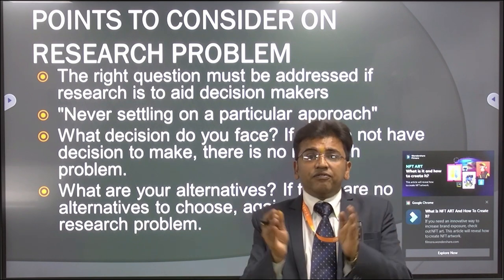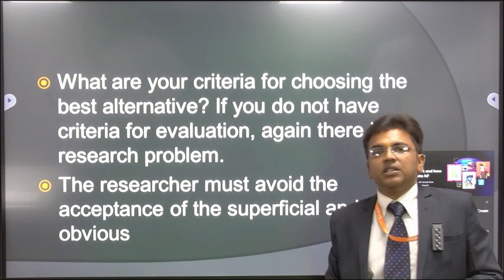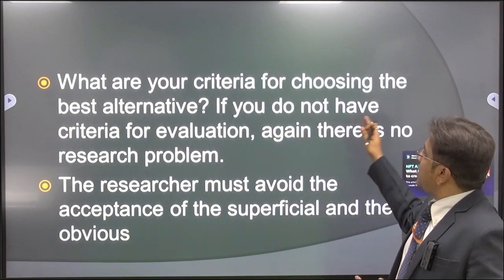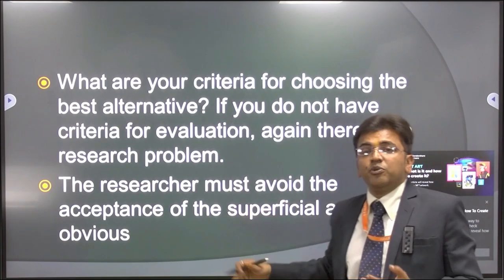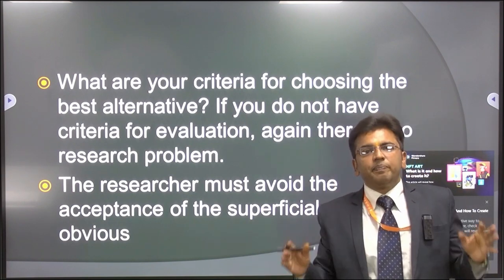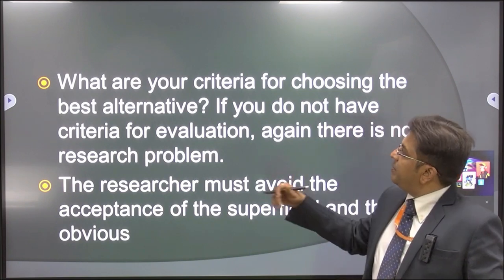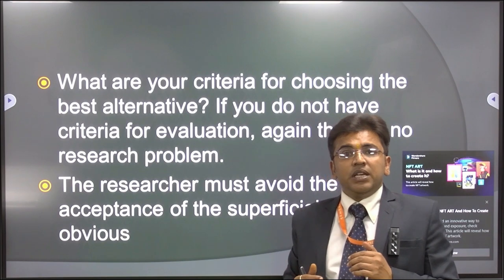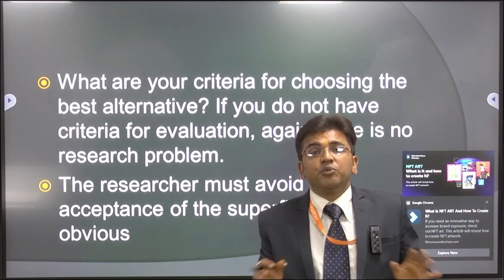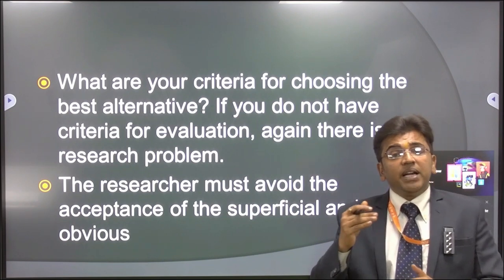What are the criteria for choosing the best alternatives? If you do not have criteria for evaluation, again there is no research problem. If you don't have different parameters, you don't have a research problem. You have to see things and research them with a different dimension and by a different approach.